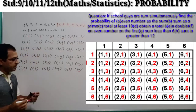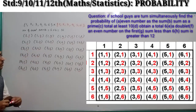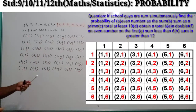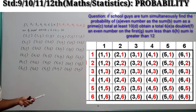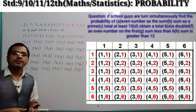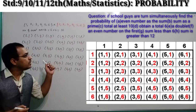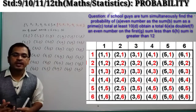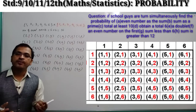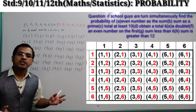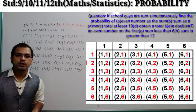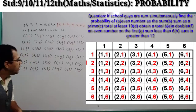So these 36 are the possible events if two dice are thrown simultaneously. On the basis of this data, we can find out different possibilities of outcomes.